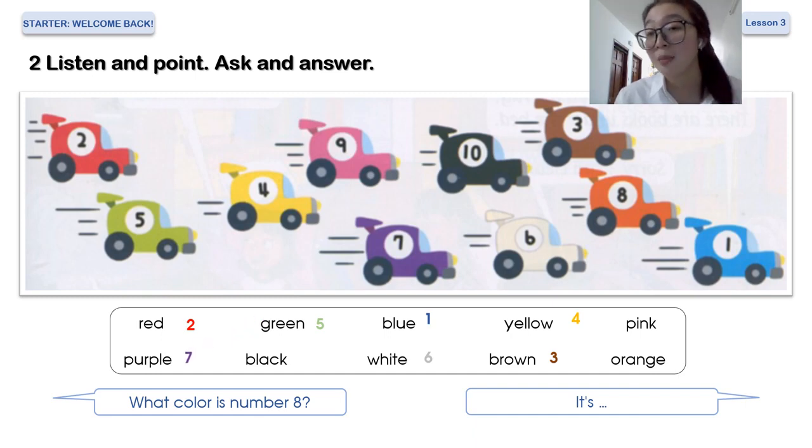What color is number 8? It's orange. What color is number 9? It's pink. And the last one, number 10, what color is number 10? We can see it's black.